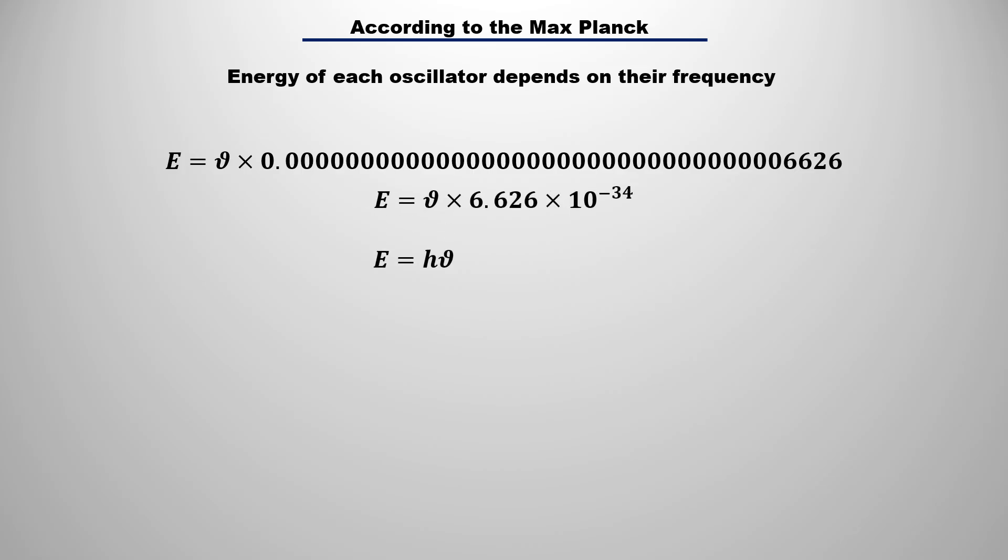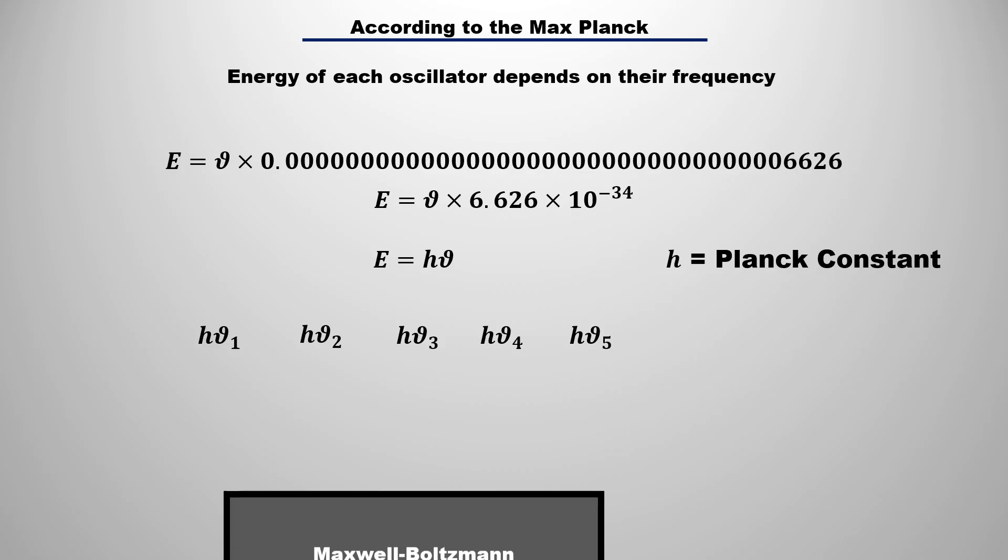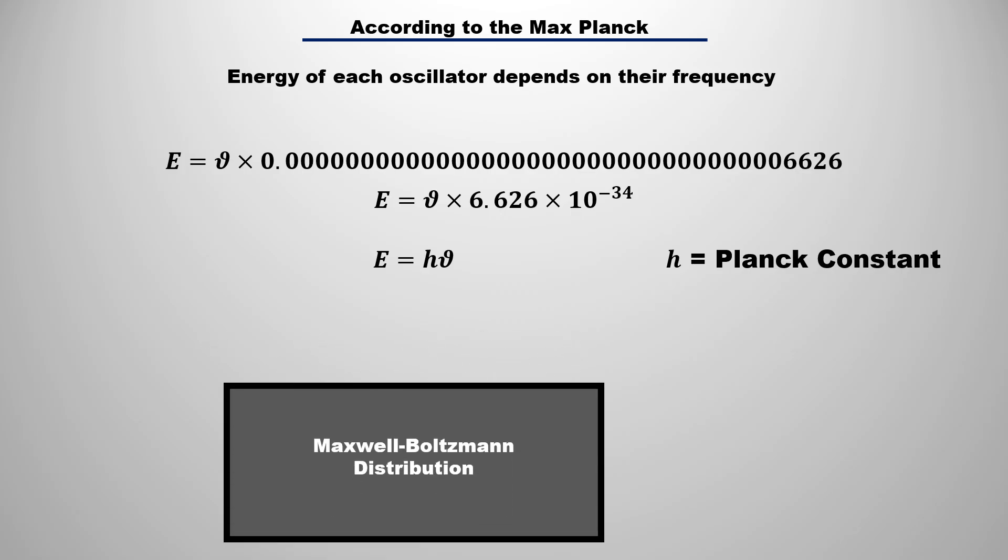Few years later, this constant number was named as Planck constant. If in the cavity, radiations have different frequencies, then Planck calculated the average energy of all radiations with the help of Maxwell-Boltzmann distribution, which came h nu over e to the power h nu upon kT minus 1.